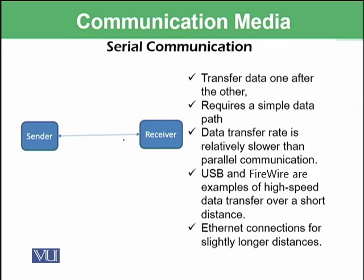In serial communication, we have a sender and a receiver with only one dedicated line. Whatever data is sent from sender to receiver is sent on this single connection — data is transferred one after the other. This requires a simpler data path, but the data transfer rate is relatively slower than parallel communication.